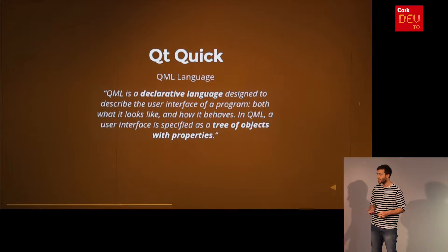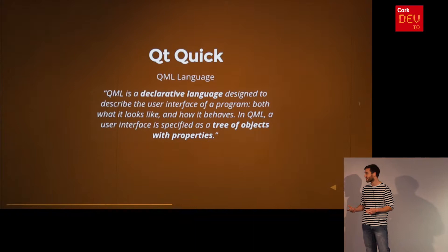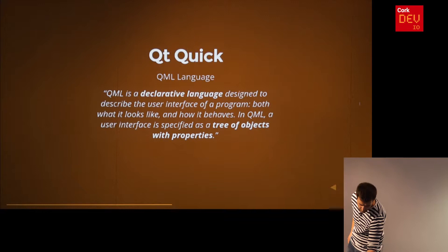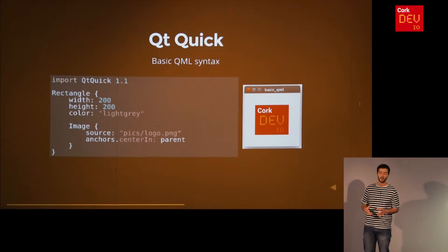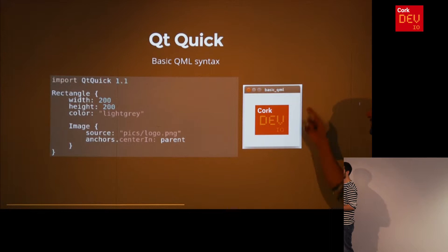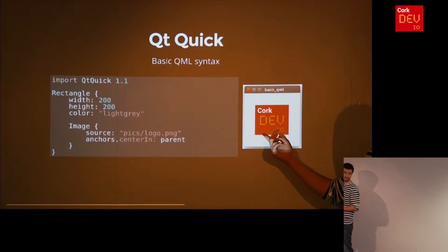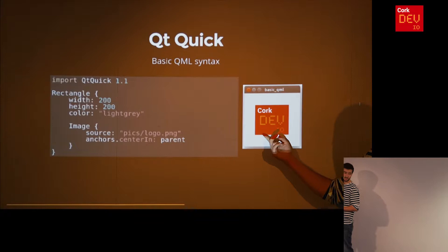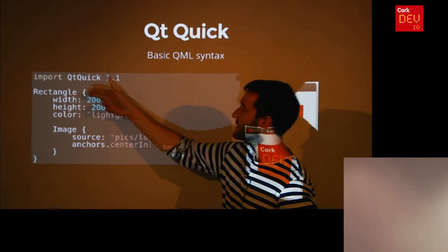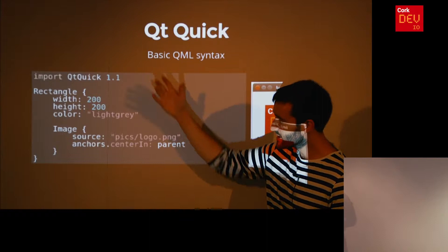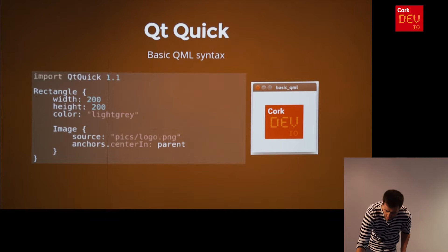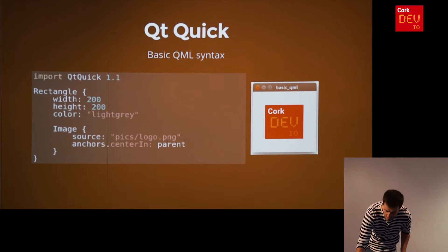QML is a declarative language designed to describe the user interface of a program — both what it looks like and how it behaves. In QML a user interface is specified as a tree of objects with properties. For example, if we want to draw a 200x200 pixel rectangle with a light gray background and display an image centered within it, the root object is a rectangle with width, height and color properties, and we have a child object — an image — with a source and an anchors.centerIn property linking it to its parent rectangle. That's what QML looks like.